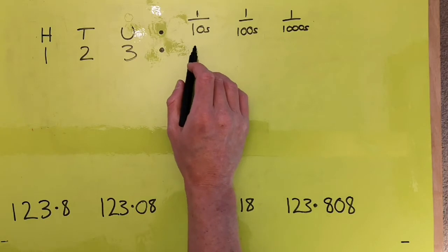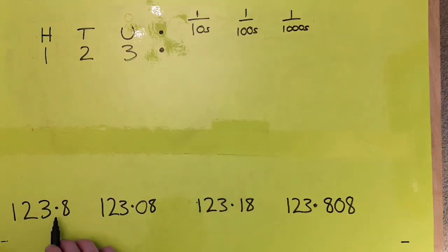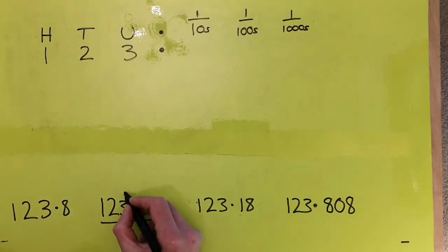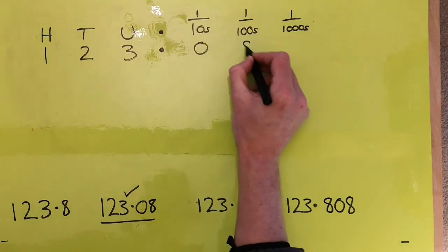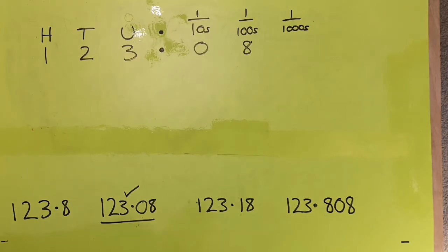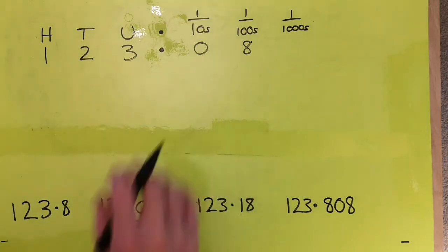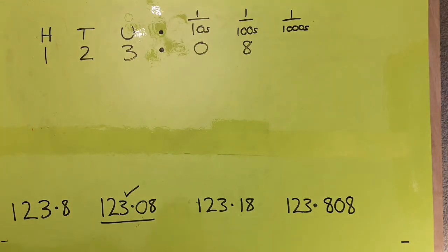And we're looking for the smallest digit now. So in the tenths column comes after the decimal point. So the one after the decimal point, well, that's an 8. That's a 0, so that's less than that. That's a 1, so that's slightly more than that one. And this one's an 8 too. So our smallest one has to be this one here. So I'm just going to tick that one and put that one in on here.